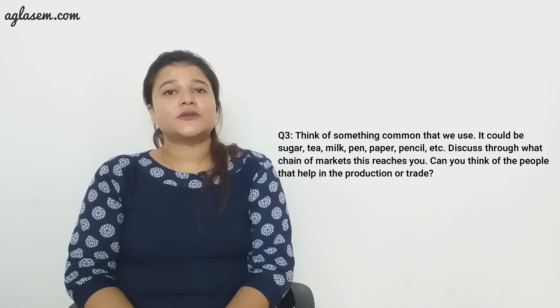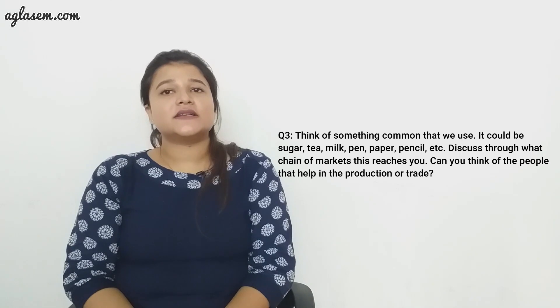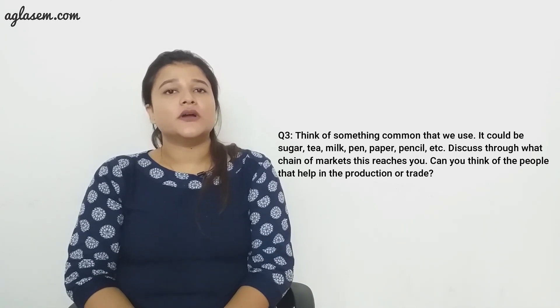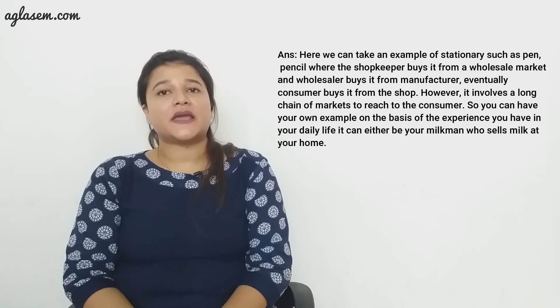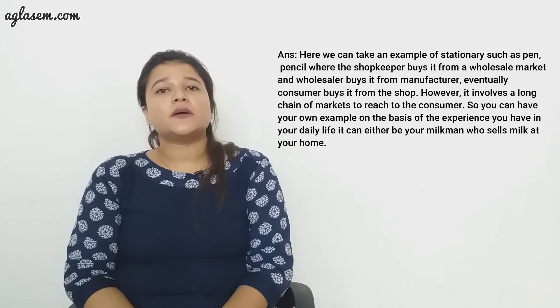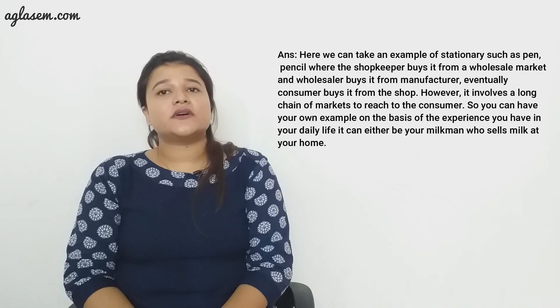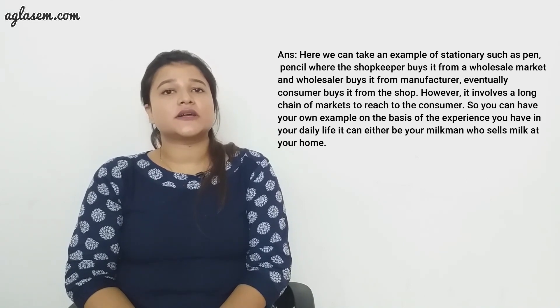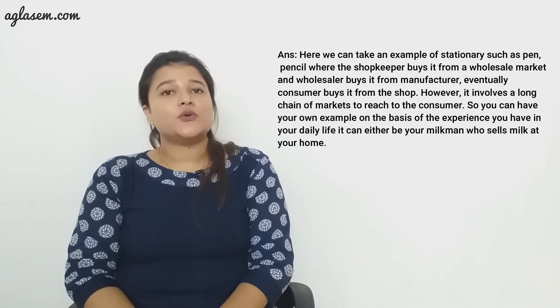The next question asks us to think of something common that we use — it could be sugar, tea, milk, pen, paper, pencil, etc. — and discuss through what chain of markets this reaches you. Here we can take an example of stationery such as pen or pencil, where the shopkeeper buys it from a wholesale market and the wholesaler buys it from the manufacturer. Eventually the consumer buys it from the shop. It involves a long chain of markets to reach the consumer. You can have your own example based on your daily life experience.